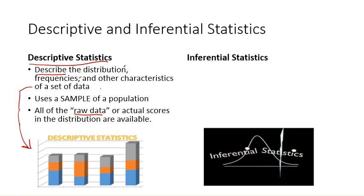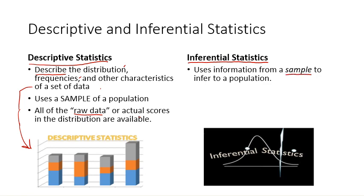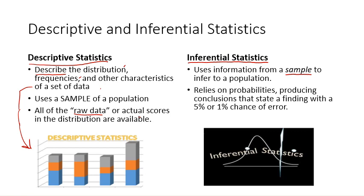We're going to begin now to work with inferential statistics. This is what we'll work with for the remainder of the semester, and this is different from what we have been doing with descriptive stats. So in inferential statistics, we use information from a sample or a subset of individuals from a population, and we use that information to infer something about the population. This kind of statistics relies on probabilities, which are just like the odds that you think about when you're gambling. What are the odds of winning at a machine? That's what we're doing with inferential statistics. We produce conclusions that state a finding with a 5% or 1% chance of error.